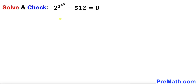Welcome to pre-math. In this video we are going to solve this given nested exponential equation: 2 power 3, and then power 4, and power x, minus 512 equals to 0. We are also going to check for any extraneous solutions as well.